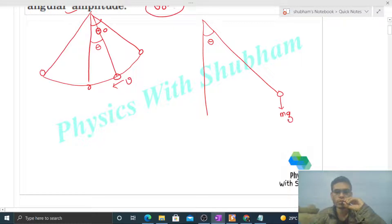One is mg acting vertically downward and tension. Now you have to take the component of mg, one in radial direction. This angle is theta, so in this direction mg cos theta, and in this direction comes mg sin theta. Now this mg sin theta is the tangential force that will be responsible for the tangential acceleration.